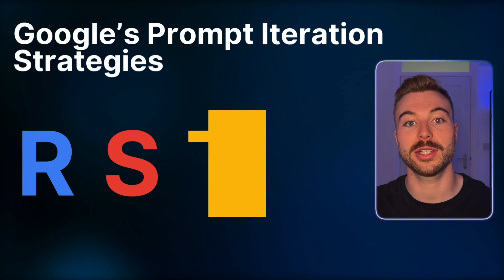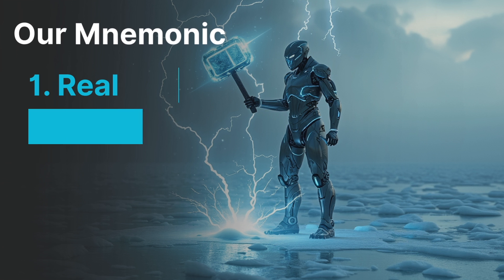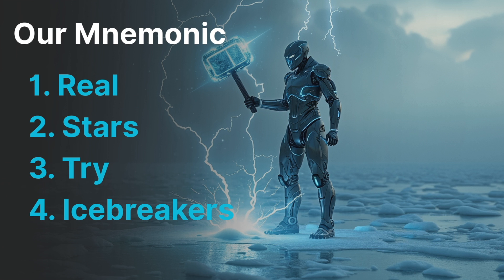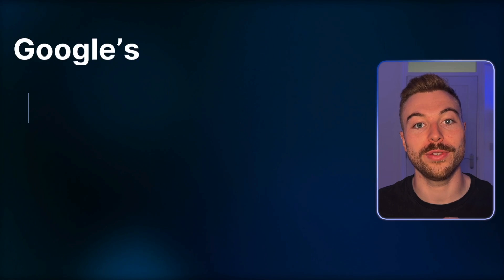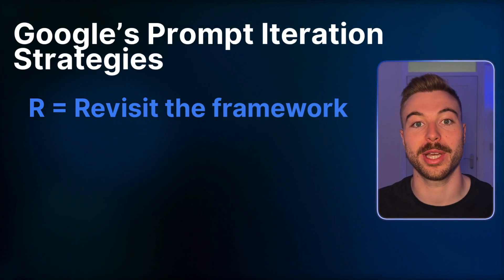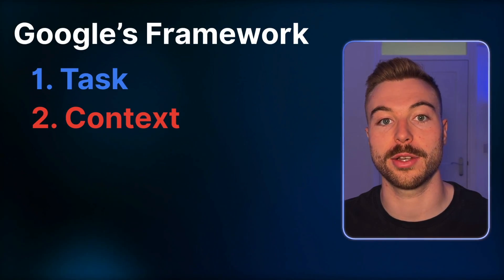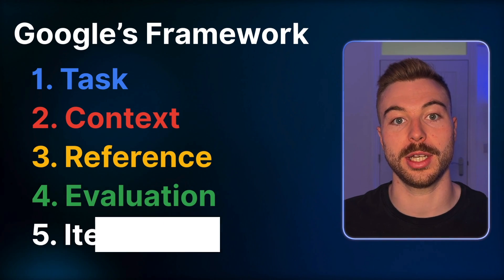If you're still not getting the great outputs you want, Google's prompt engineering course has some prompt iteration strategies. They use RSTI, but we've changed it to a really nice mnemonic: 'real stars try icebreakers,' which is much more memorable. First, we're going to revisit that framework - task, context, references, evaluate and iterate - seeing if we need to provide more clarity or a better persona specific to that environment, such as a marketing person or a sales team.